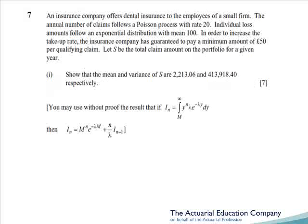Question 7, and we're told that claims come in as a Poisson process with parameter 20, and the claim amounts are exponential with mean 100, and we want to work out the mean and variance of the total claim amount. Well this will be no problem, we'll just use our compound Poisson formulae given in the tables, except there's a twist.